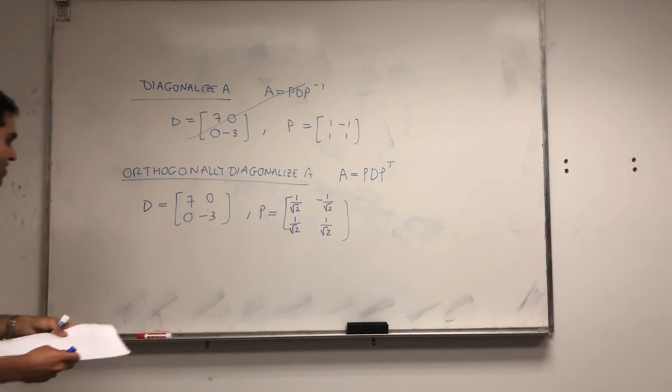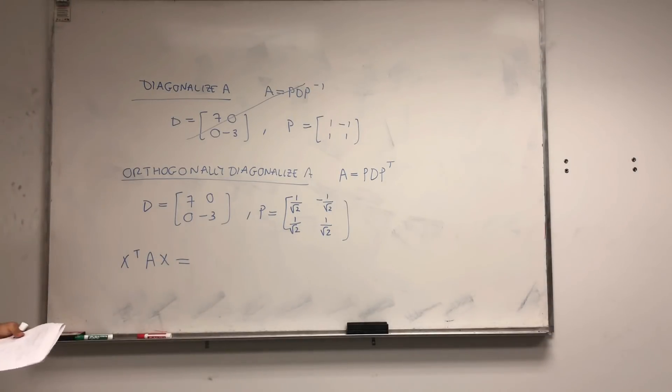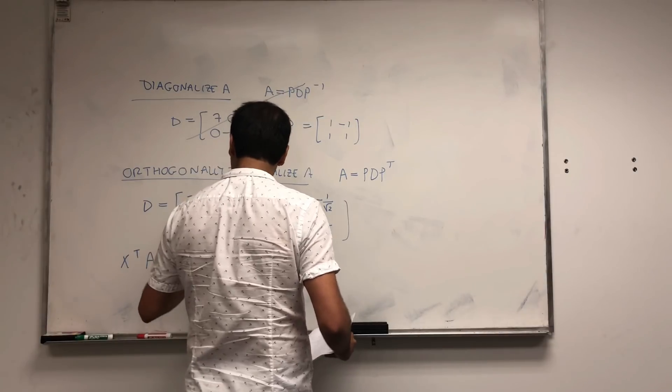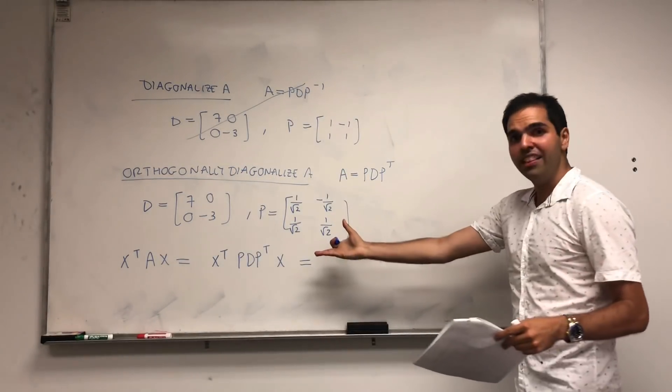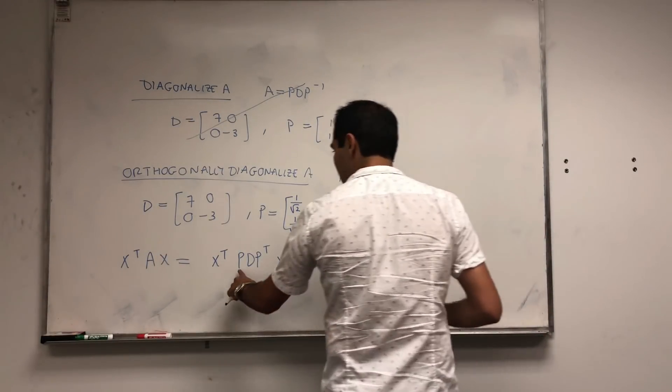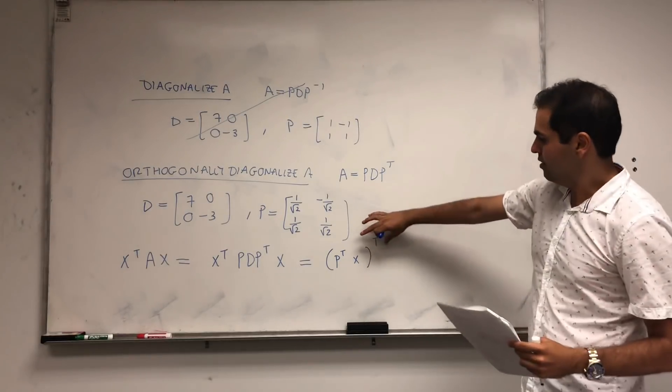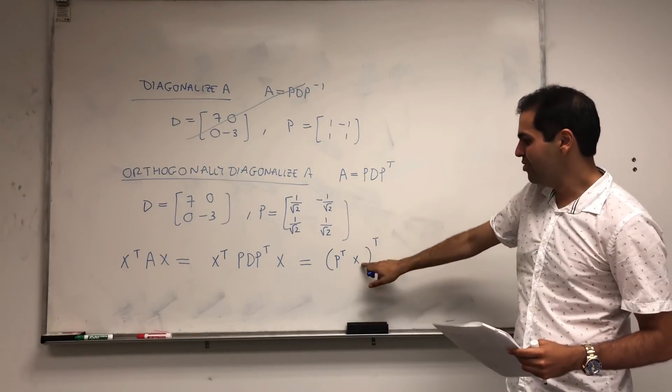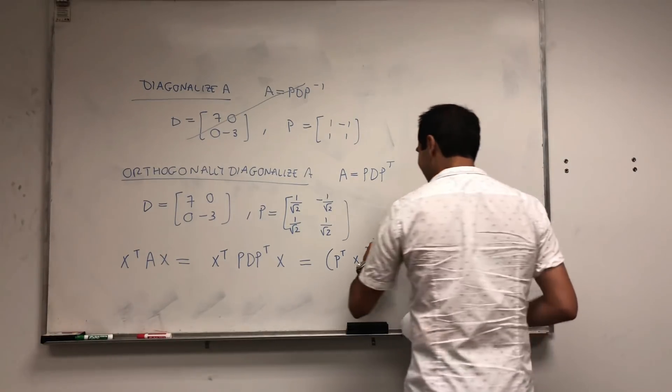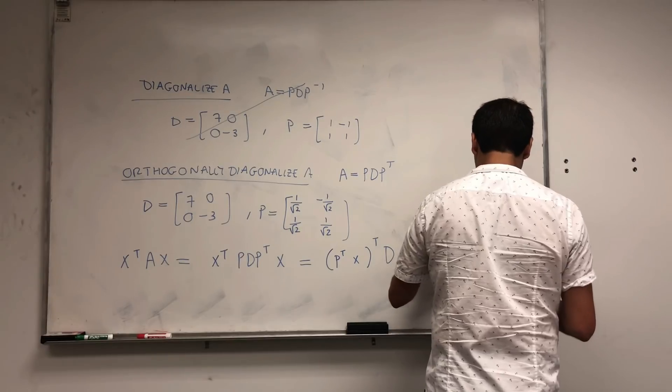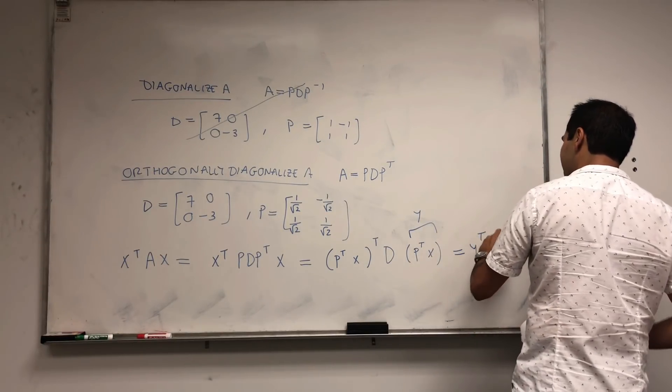Alright, why was that so useful? Let me tell you now why. Because we have X transpose AX. Remember, there was an essential quadratic form. Now we have A is PDP transpose, so this becomes X transpose PDP transpose X. And it turns out you can write this in terms of a new quadratic form.